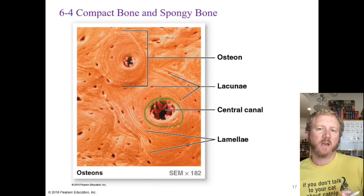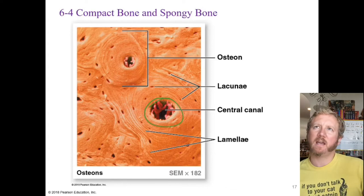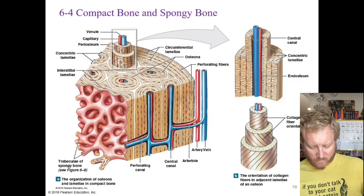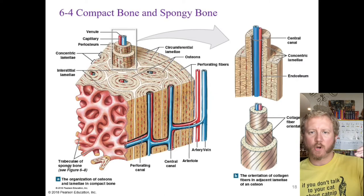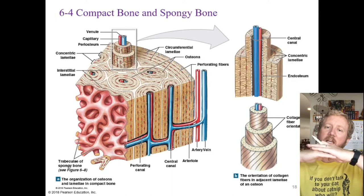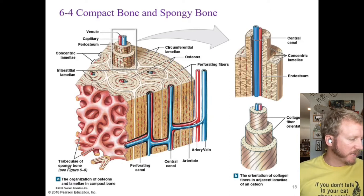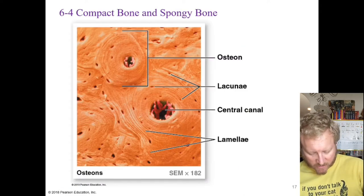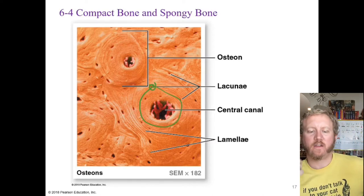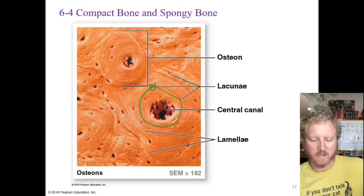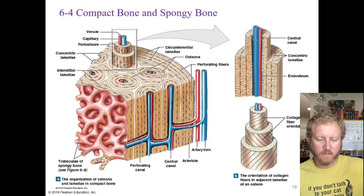These different cells and structures come together to form an osteon — the functional unit of compact bone. The osteon has a central canal containing blood vessels, acting as a highway. Perforating canals run perpendicular to the central canals, allowing blood vessels to travel laterally through the bone. Lamellae are concentric circles around the central canal — like tree rings — filling spaces between osteons.